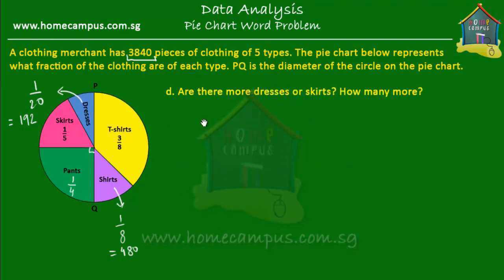The next question is: are there more dresses or skirts, and how many more? The slice representing skirts is clearly bigger than the slice representing dresses. A pie chart is always drawn to scale, so if there are more skirts than dresses, the skirts slice must be bigger. The fraction for skirts is one fifth, and for dresses it is one twentieth. Since one fifth is bigger than one twentieth, there are obviously more skirts than dresses.